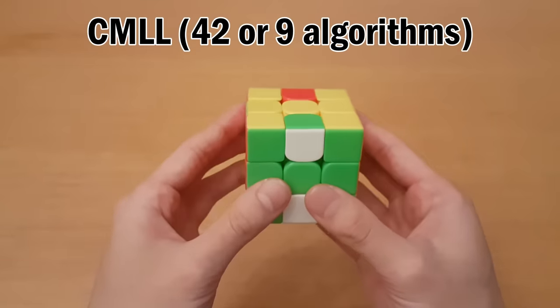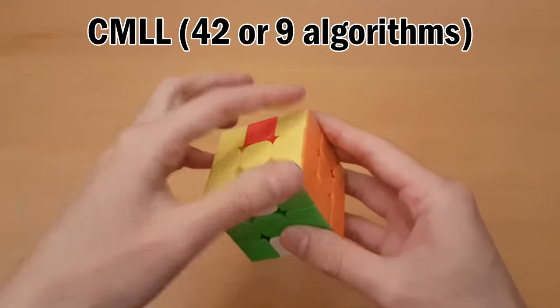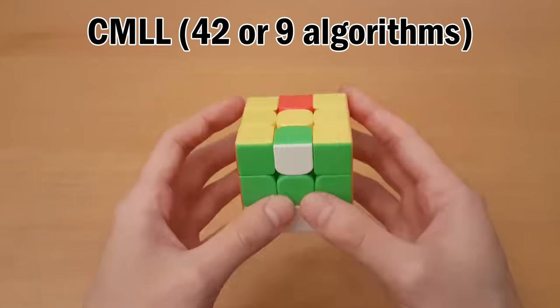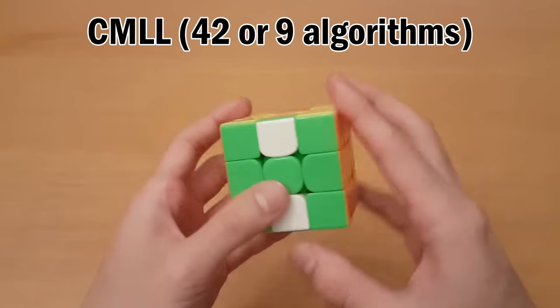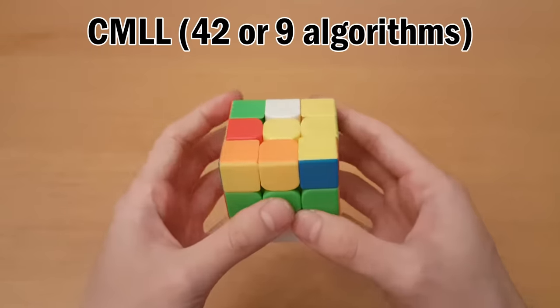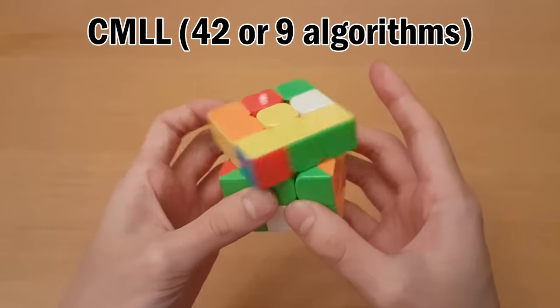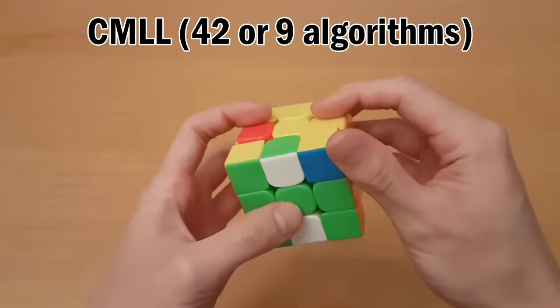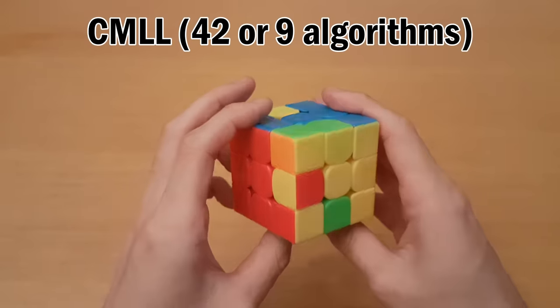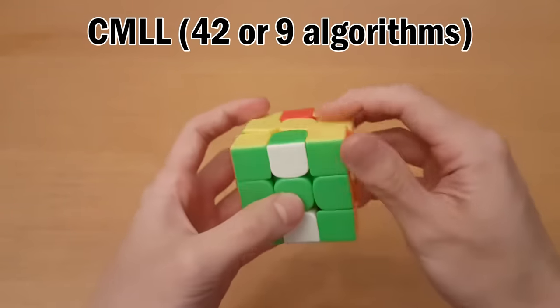So the next step that we actually skipped is called CMLL, which has 42 algorithms, and that solves the last layer of corners, which we happen to have already solved. If you do two look CMLL, there are only seven algorithms, so let me just set up a case. So here you would recognize the corner orientation first, just like you would for OLL, and then for the second look, you would do the algorithm for it, and then next you would just get a Y perm or a J perm, and then you can just do that. And that solves all the corners.